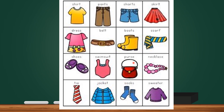Next is purse. Purse. Purse is also the same as a handbag, or it can be a small pouch of leather or plastic used for carrying money. The next one is necklace. Necklace. N-E-C-K-L-A-C-E. Necklace is a piece of jewelry worn around the neck.